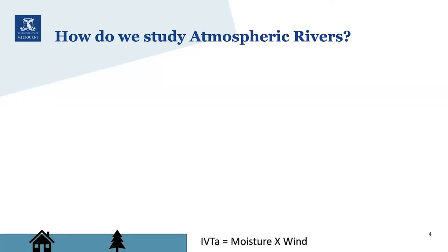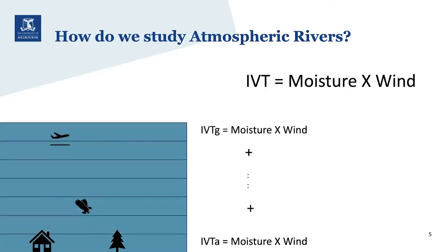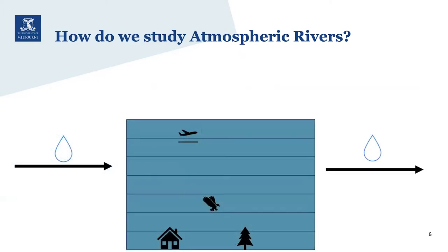We study atmospheric rivers by taking the moisture concentration times the wind speed at vertical increments throughout the layer of the atmosphere. We then add these all up, and this provides an estimate of water vapour transport through the column of the atmosphere.